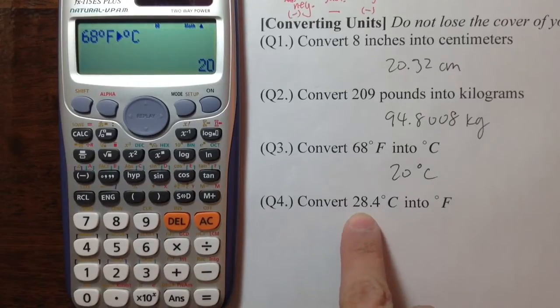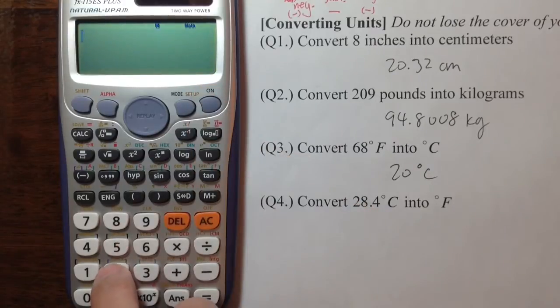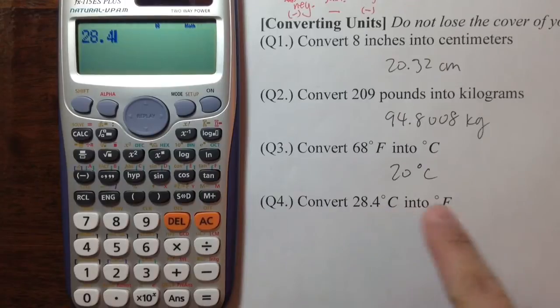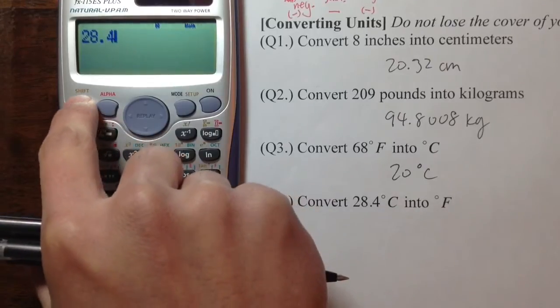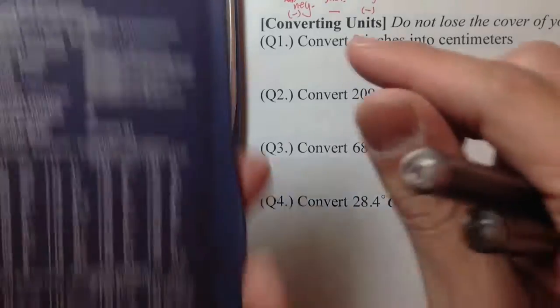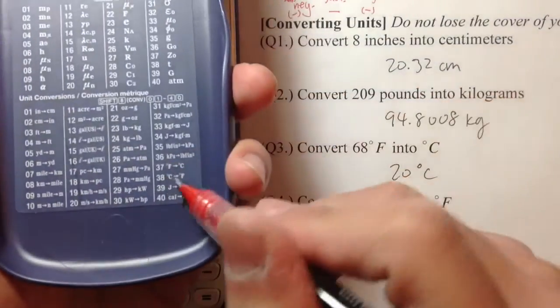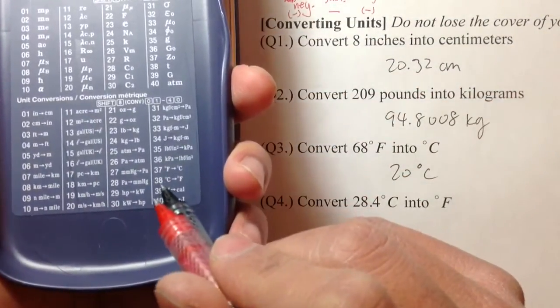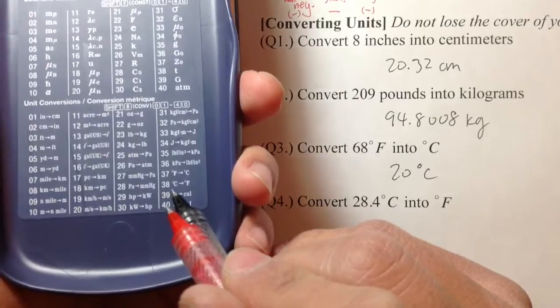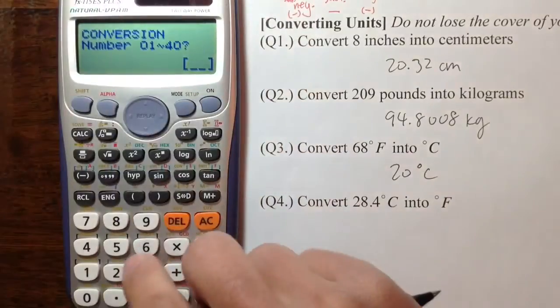Next one, I need to do the opposite, 28.4 degrees Celsius. So 28.4 degrees Celsius. And to get degrees Celsius into Fahrenheit, you hit shift and convert. And look at the conversion factor. And that's the number 38, from degrees Celsius to degrees Fahrenheit. So I need 38.